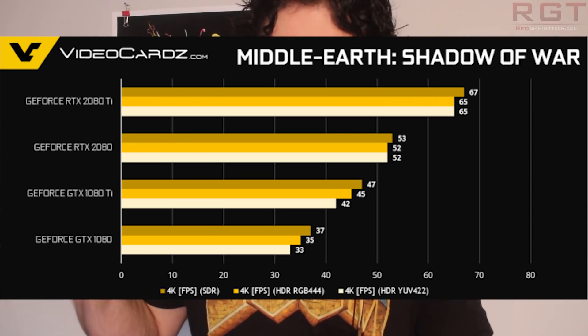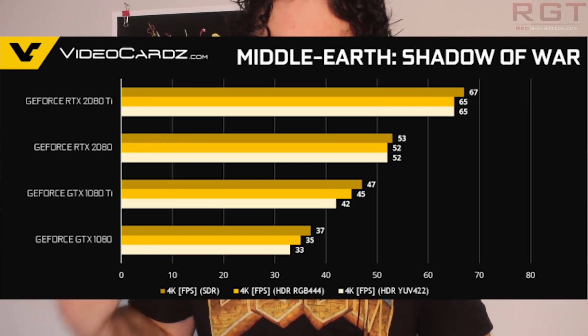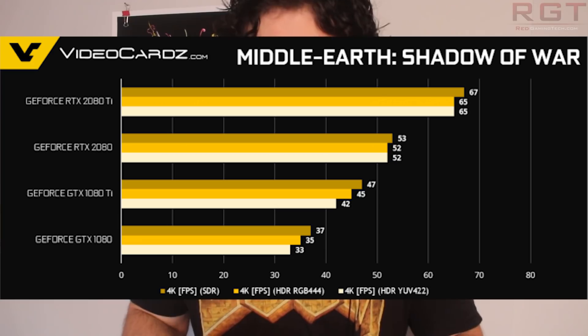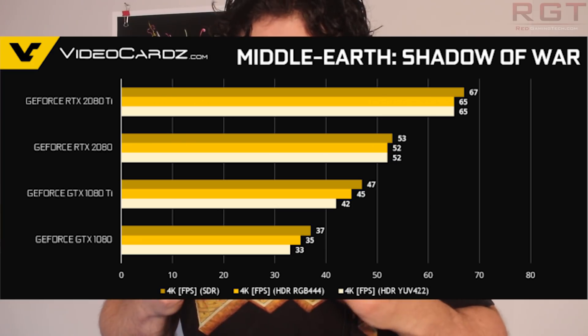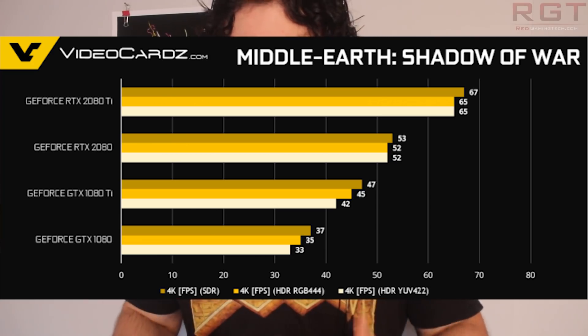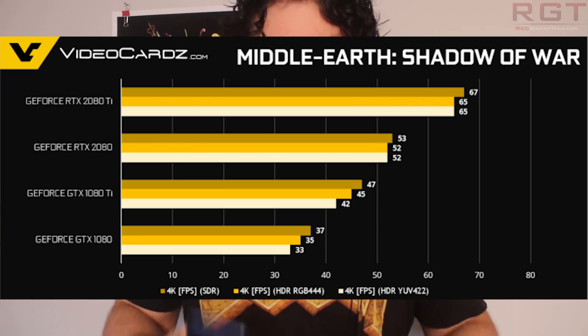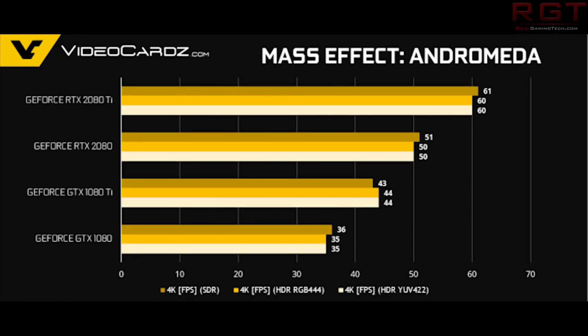Mass Effect Andromeda: 60 FPS for the RTX 2080 Ti compared to 44 FPS for the GTX 1080 Ti — a fairly significant difference. Some people will be disappointed it's not 200 FPS at 4K, but this is still a significant increase, and there are additional factors to consider.